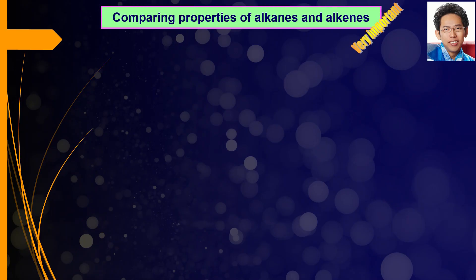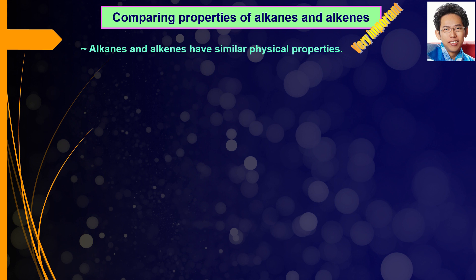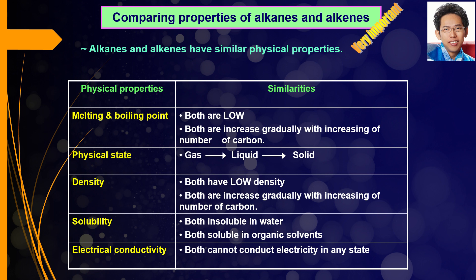We are going to compare properties of alkanes and alkenes. This is very important because it is a famous question in SPM. When asked, the questions will mostly appear in Paper 2, even in essay questions. Alkanes and alkenes have similar physical properties because they are both hydrocarbons built up with carbons and hydrogens only.